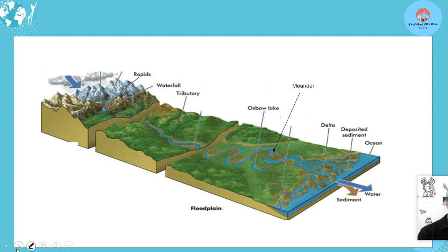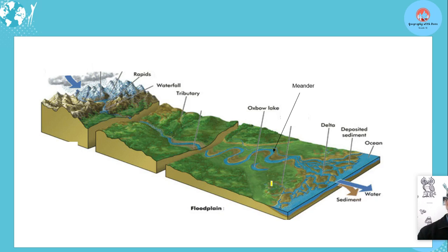Just to show you an overall view — your upper course, your middle course, and your lower course. You can see where features form: in the upper course, rapids and waterfalls; in the middle course, the river starts to meander; and in the lower course, you have huge meanders, oxbow lakes, deltas, and deposited material forming sand islands. If sand islands form along the course of the river, you would also have braided streams. You also have the floodplain in this area.